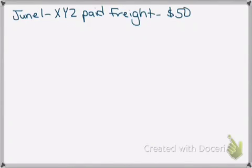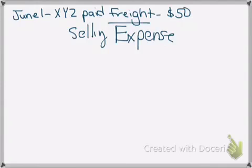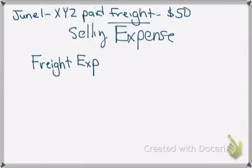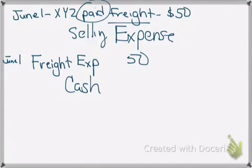Then we move to the next one where XYZ actually pays the freight for fifty dollars. Being that we are selling these goods, freight is actually going to be an expense — a selling expense for us. It can be called freight out or freight expense; those are just some of the terminologies you will see in different places. It is on June 1st and we are paying fifty dollars. The keyword 'paid' means cash is going out, so it is on the bottom as our credit account. This differs from when we purchased supplies and freight was part of inventory — here it's a selling expense, so you use freight out or freight expense.